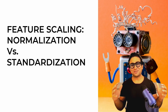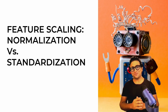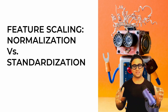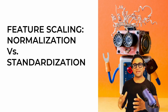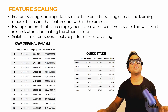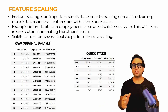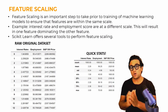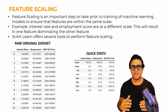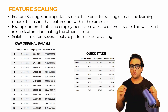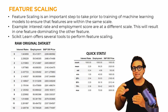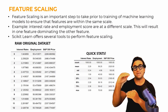Hello everyone and welcome to this new video on feature scaling. Today we will learn about the difference between normalization and standardization. Feature scaling is an important step that we do prior to training any machine learning models, and the objective is to ensure that all features in our data have the same scale.